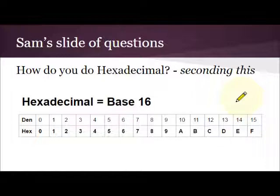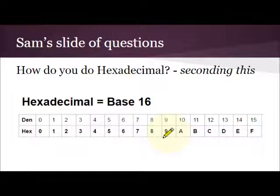Hexadecimal works slightly differently — it uses base 16. So it still uses 0 to 9, but then it ran out of numbers. So in order to keep to a single digit, it uses A, B, C, D, E and F, which essentially means that we can count all the way up to 15 just using a single digit. What that means for us is that we can save much larger numbers with fewer digits.